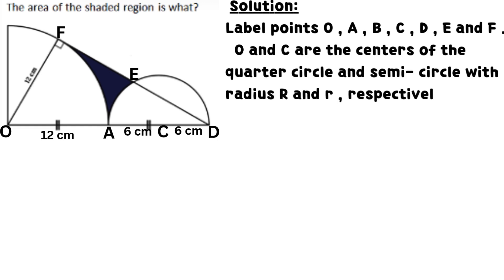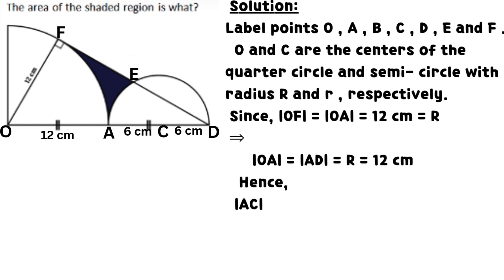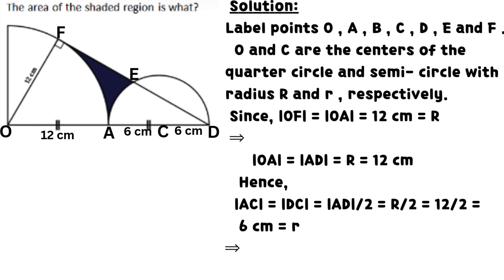O and C are the centers of the quarter circle and semicircle with radius R and r respectively. Since OF equals OA which equals 12 centimeters, line OA equals line AD which equals R, that is 12 centimeters. Hence, line AC equals line DC which equals half of line AD. This result equals half of R, which equals 6 centimeters. The small r is the radius of the small semicircle.